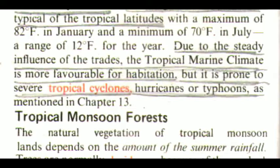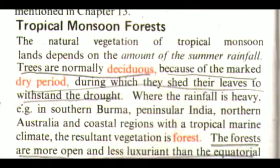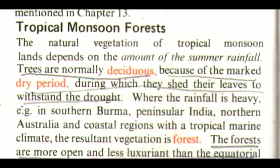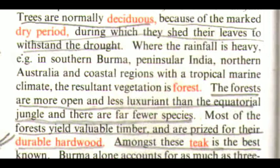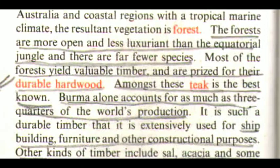Tropical Monsoon Forests. The natural vegetation of tropical monsoon lands depends on the amount of summer rainfall. Trees are normally deciduous because of the marked dry period, during which they shed their leaves to withstand the drought. Where the rainfall is heavy — for example in southern Burma, peninsular India, northern Australia, and coastal regions with a tropical marine climate — the resultant vegetation is forest. The forests are more open and less luxuriant than the equatorial jungle and there are far fewer species. Most of the forests yield valuable timber and are prized for their durable hardwood. Among these, teak is the best known.